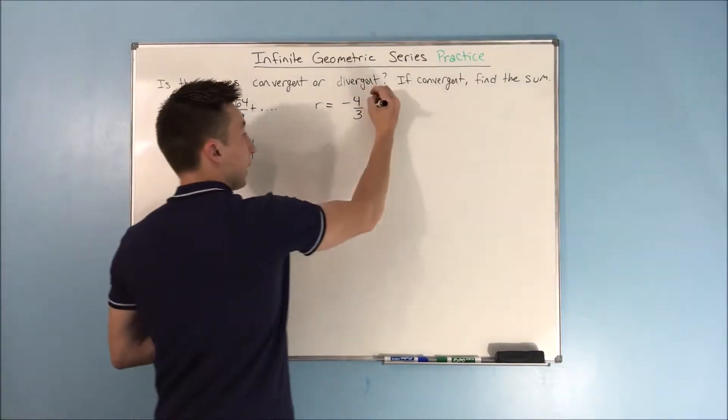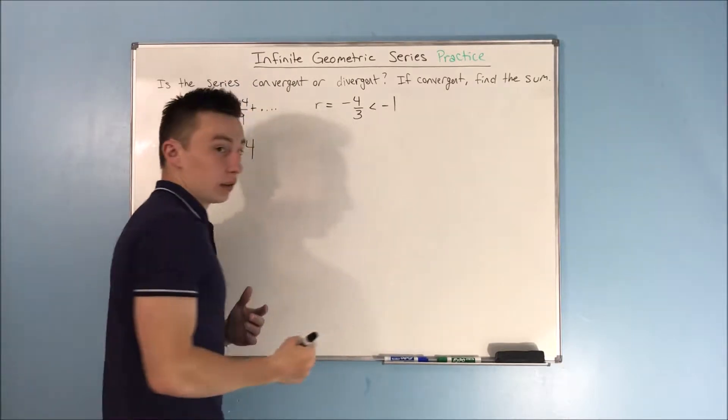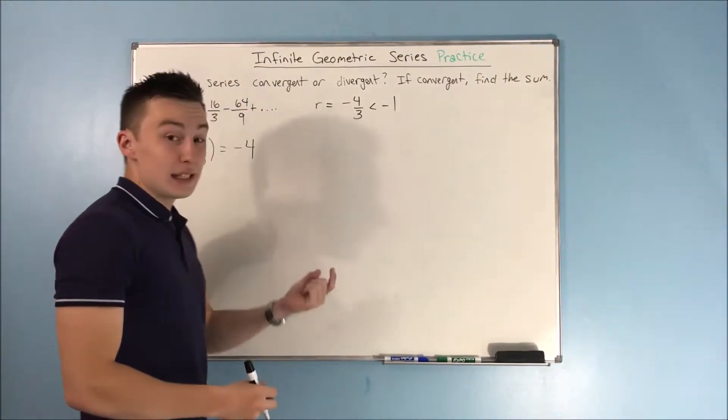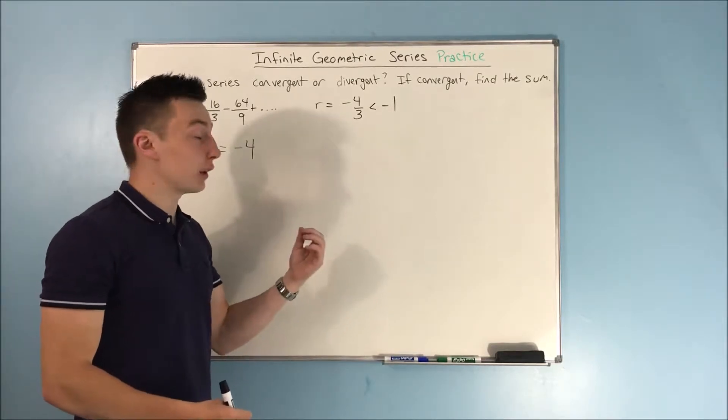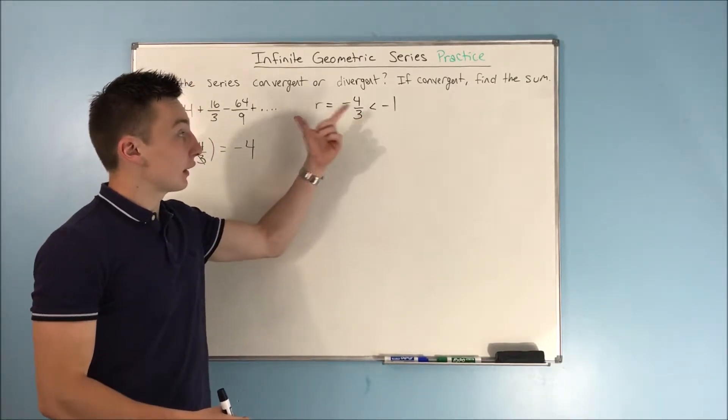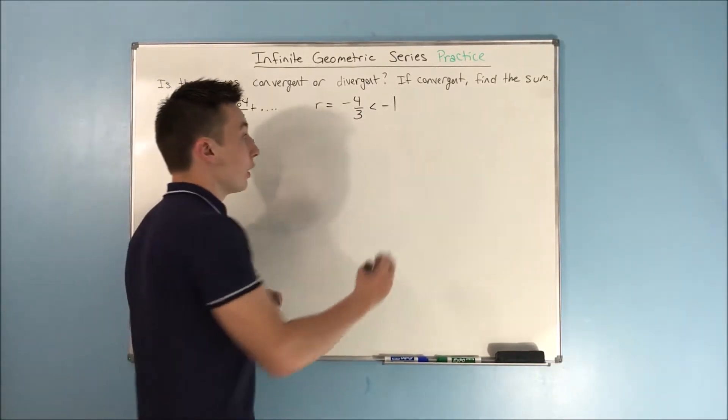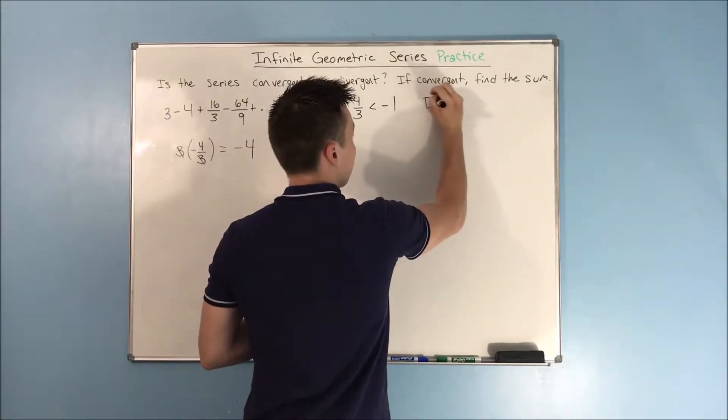Now, since that is less than negative 1, remember that R needs to be in between negative 1 and 1 if this series is going to be convergent. So, since it's not, since it's less than negative 1, we know that this series is divergent.